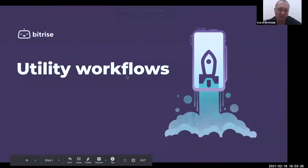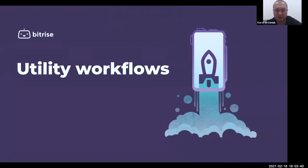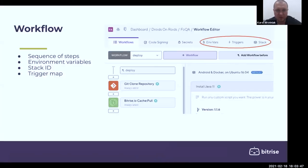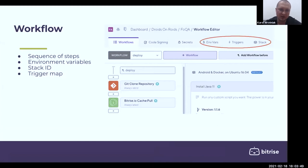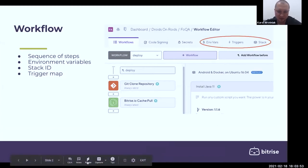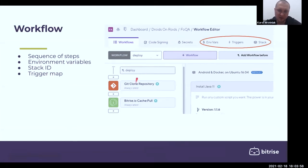Today I will talk briefly about utility workflows. First, an introduction — what is a workflow, not taking utility into account yet? Basically, a workflow is a sequence of steps which are executed in order. It also includes environment variables, stack — it can be Linux or macOS in various versions — and also triggers.